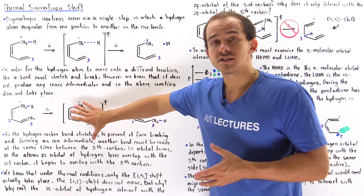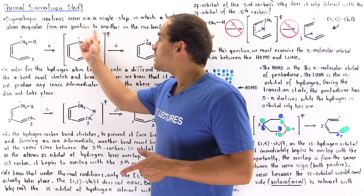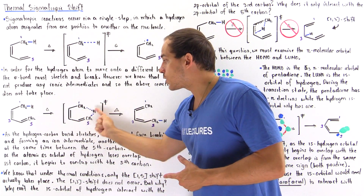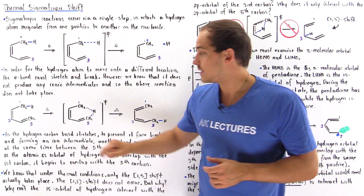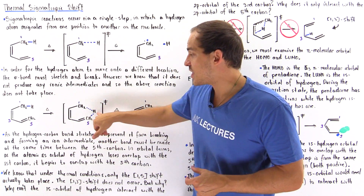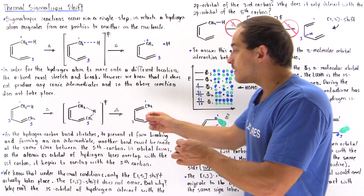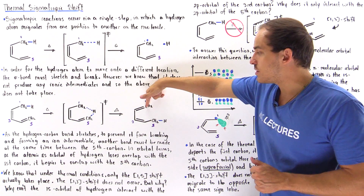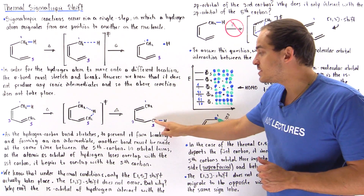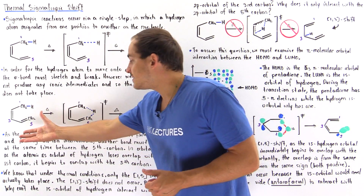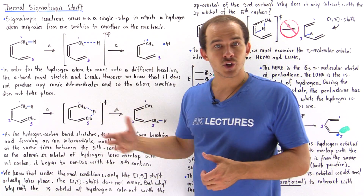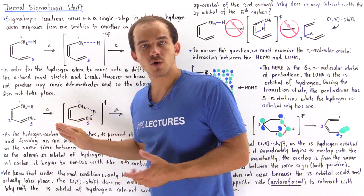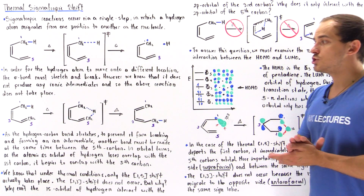What the transition state of our thermal sigmatropic shift actually looks like is this: instead of the bond only being broken, we have this bond being broken, but at the same exact time, a bond between the fifth carbon and the H atom is being made. In the final product, the bond between this carbon and the H atom is broken, but this new bond is already made. So in a single concerted step, we go from this molecule to the product — this is known as the 1,5 sigmatropic shift.